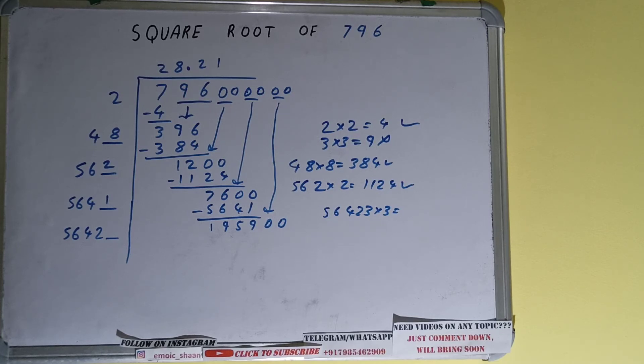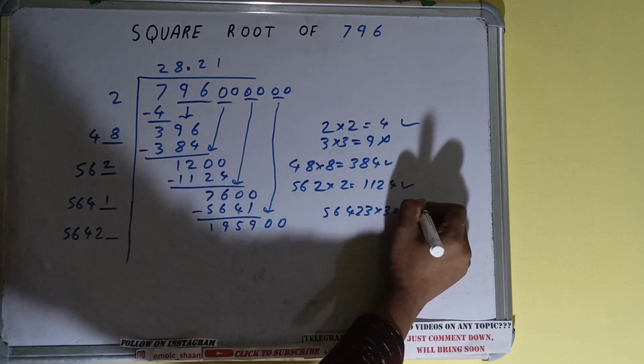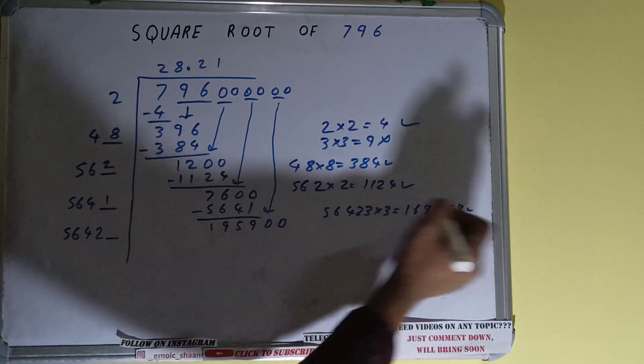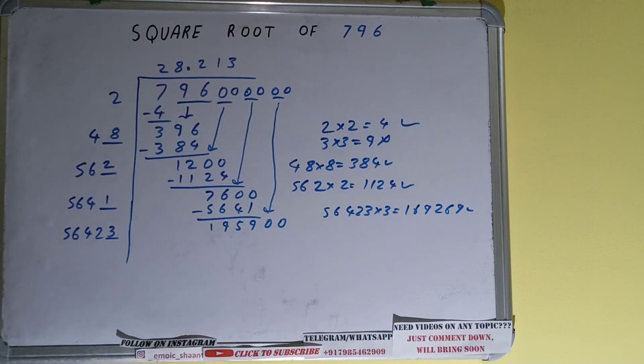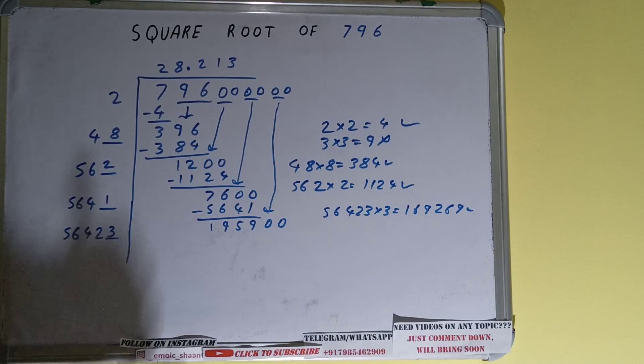56423 times 3 will be 169269. That is good to take. So 3 here and 3 here. But we don't need to calculate further because we got the answer correct up to 3 decimal places.